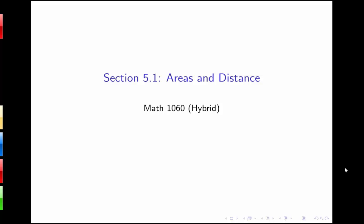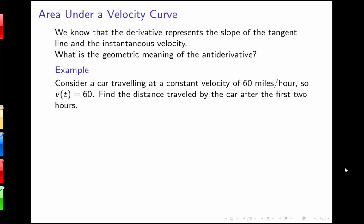In this lecture, I'm going to be talking more about the area and distance problems. To recall what we discussed in class, the derivative has a connection to the slope of the tangent line and to the instantaneous velocity problem, and there's a connection between antiderivatives and the area under a curve.